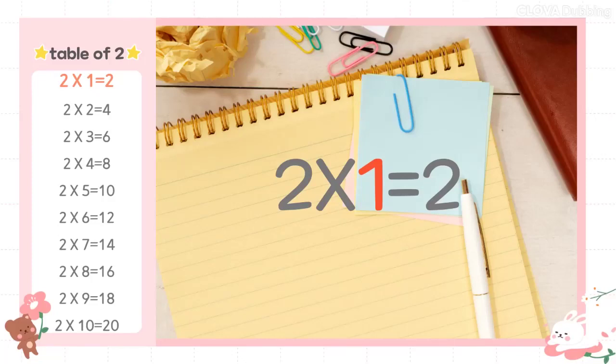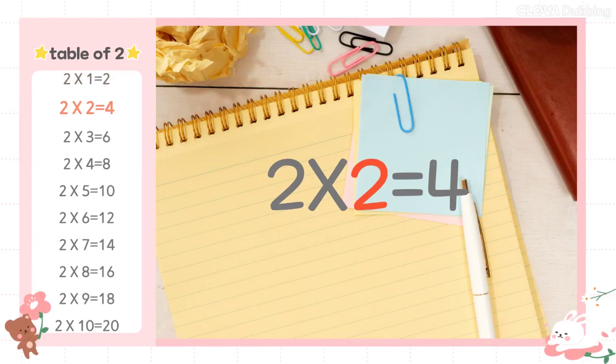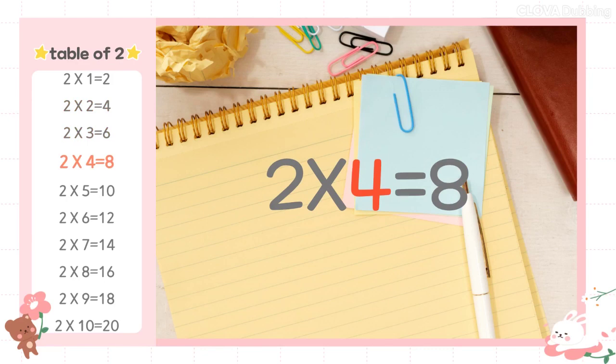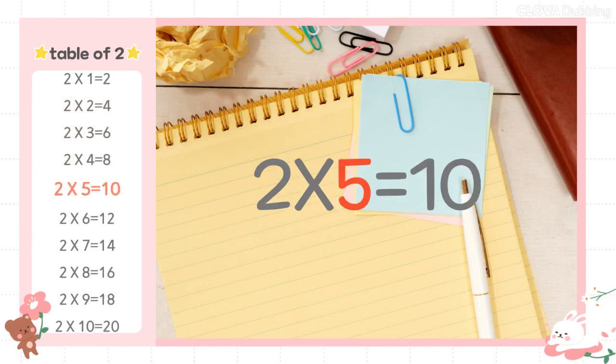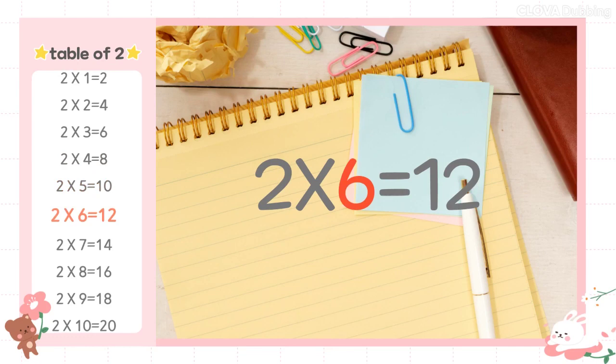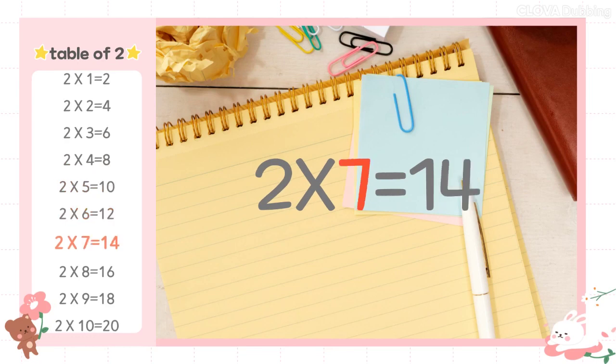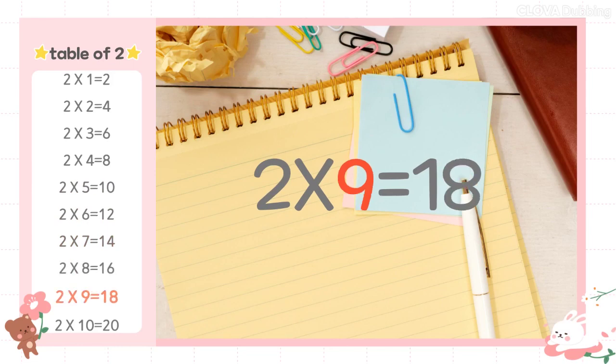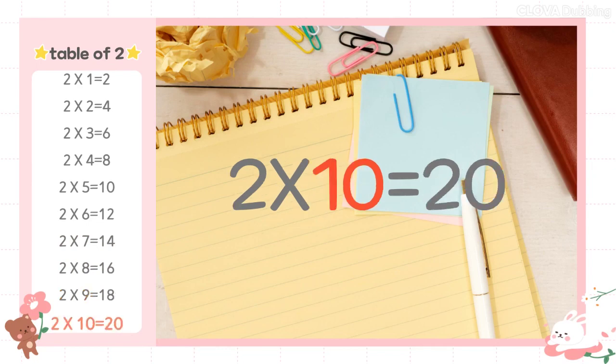2×1=2, 2×2=4, 2×3=6, 2×4=8, 2×5=10, 2×6=12, 2×7=14, 2×8=16, 2×9=18, 2×10=20